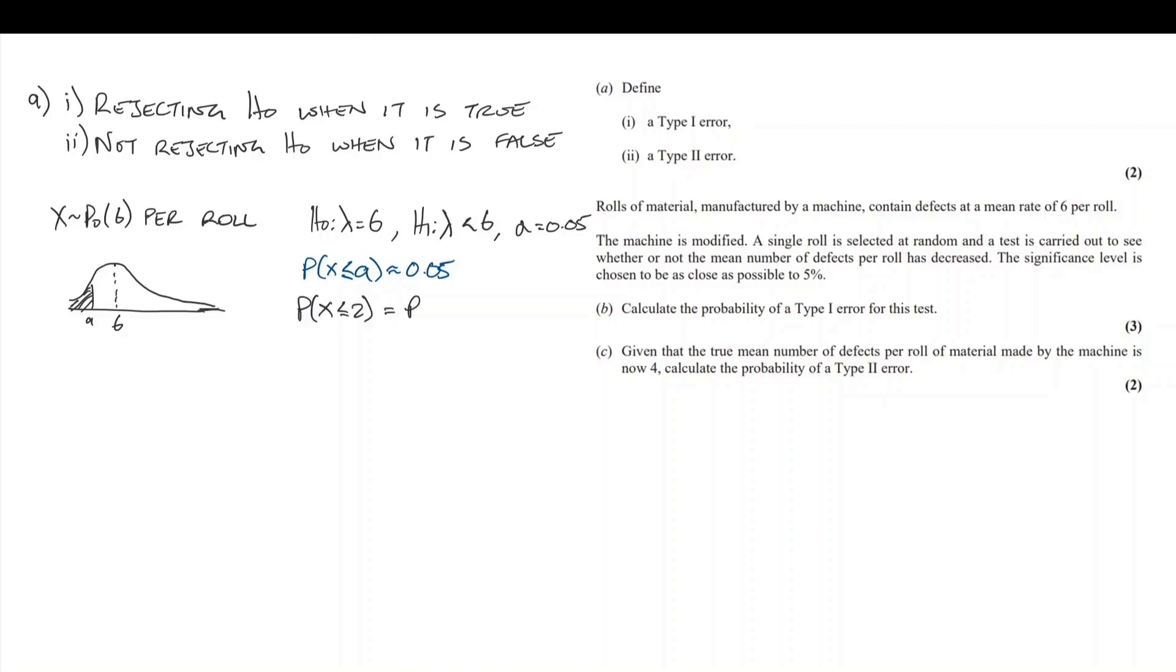Let's try some values. The probability that x is less than or equal to 2 ends up being 0.0620, 6%. Less than or equal to 1 ends up being 0.0174, that's 1.7%.